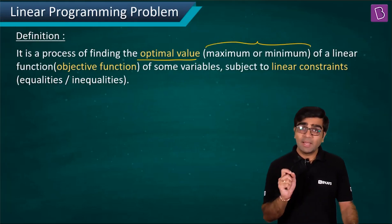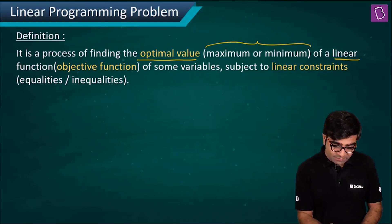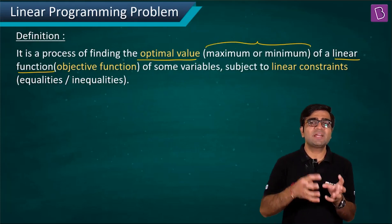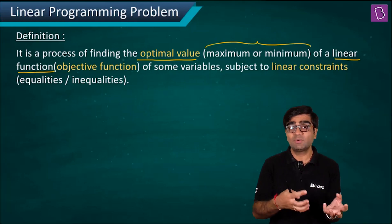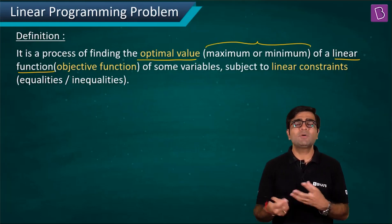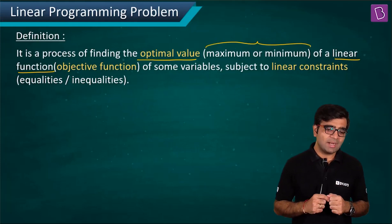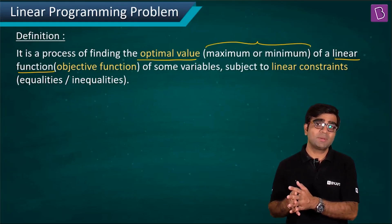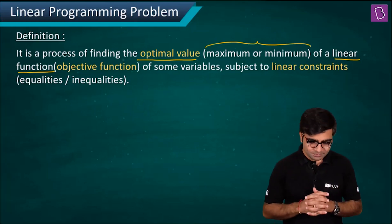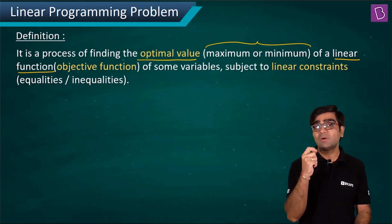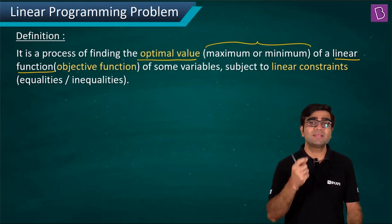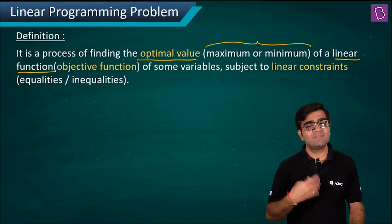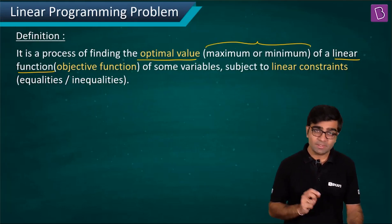Linear programming involves linear functions which we call objective functions. That objective function is what I want to maximize or minimize. For example, if I have a factory and I want to have the maximum output — that output will define a certain objective function which I have to maximize or minimize according to the given conditions.